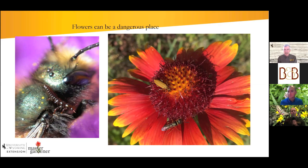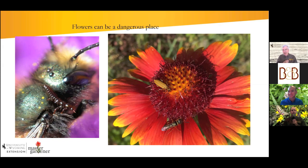Wyoming has multiple bumblebee species and they all visit flowers, but you have short-tongued, medium-tongued, and long-tongued ones. Some are active early in the season, some late — their colony life cycles differ. This year in Lusk, people buying petunia baskets early in spring were complaining about bumblebees chewing them up. Samples turned out to be Bombus griseocollis — a short-tongued bee — which was chewing up the petunias because it couldn't get into them to access what it wanted.